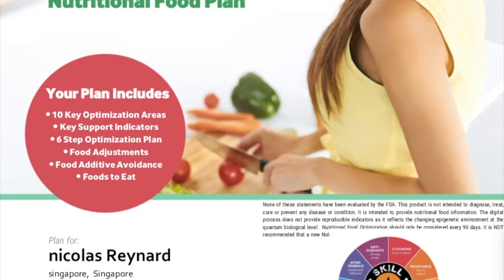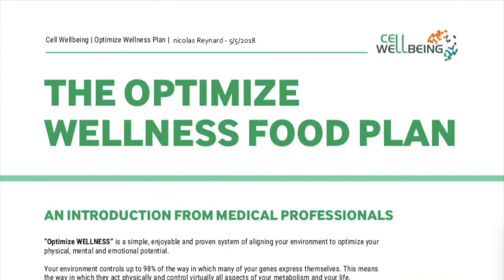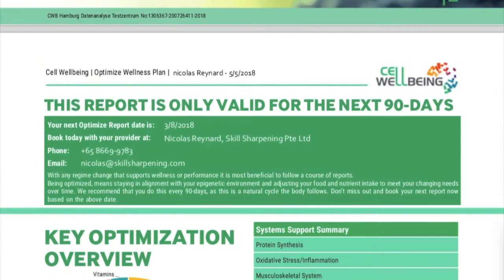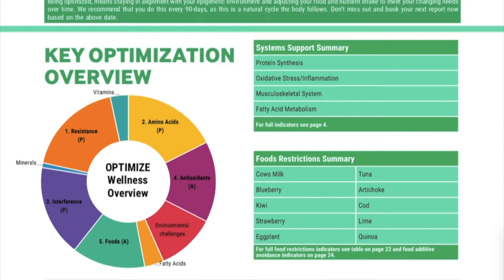On the first page you will have your 90-day optimal wellness. You can go to page three — the first page is an explanation, take time to read it. Page three is the overall of your report. You will have this first circle. The small letter 'p' is a priority, so in my case amino acid is a priority, resistance is a priority, interference is a priority. The letter 'a' is an advice, and food means food restriction.